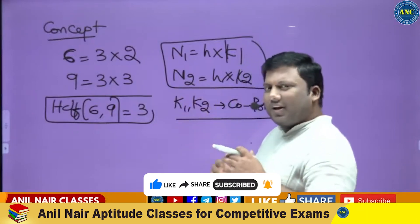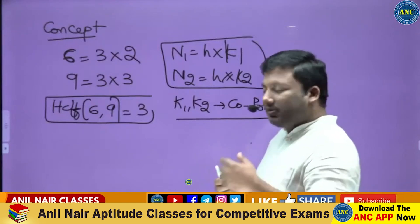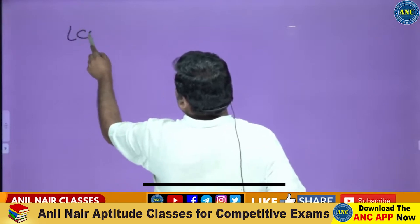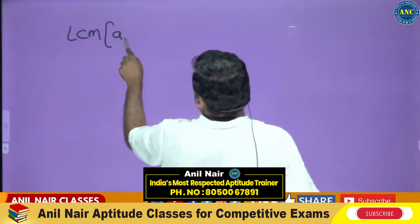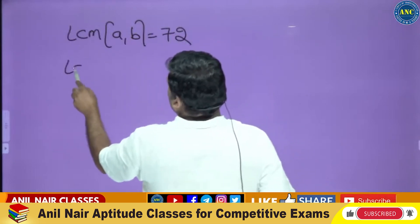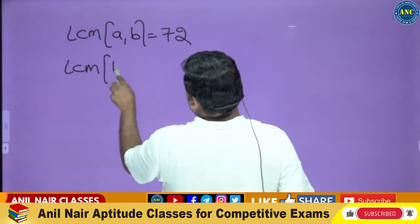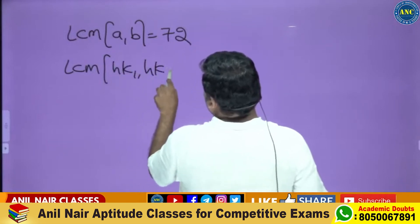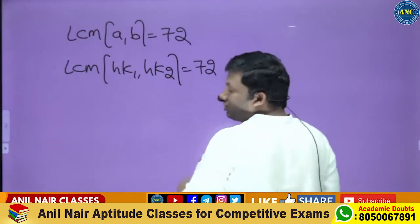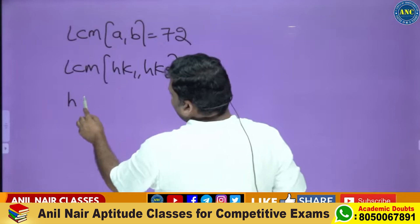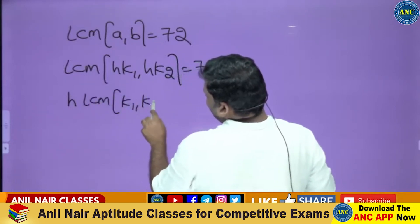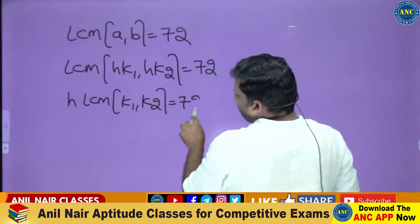Each and every concept in number system is interrelated. Suppose LCM of a and b is 72. Since a = h·k1 and b = h·k2, the LCM when finding common factors becomes LCM of k1 and k2, which equals 72.